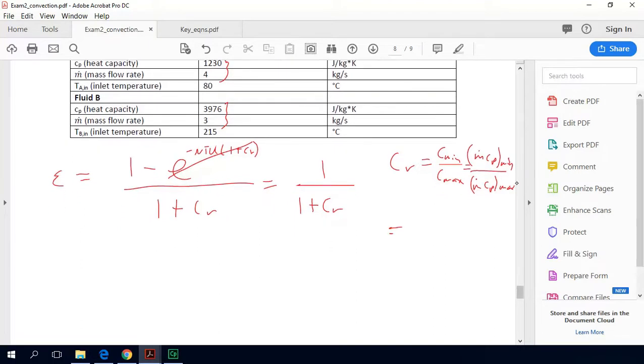So to get our CR, we would plug in these numbers: 1230 multiplied by 4, and 3976 multiplied by 3. And we end up with this heat capacity rate ratio of 0.412. We plug that in here, and we get that our effectiveness is equal to 1 over 1 plus 0.412, which is 0.708.